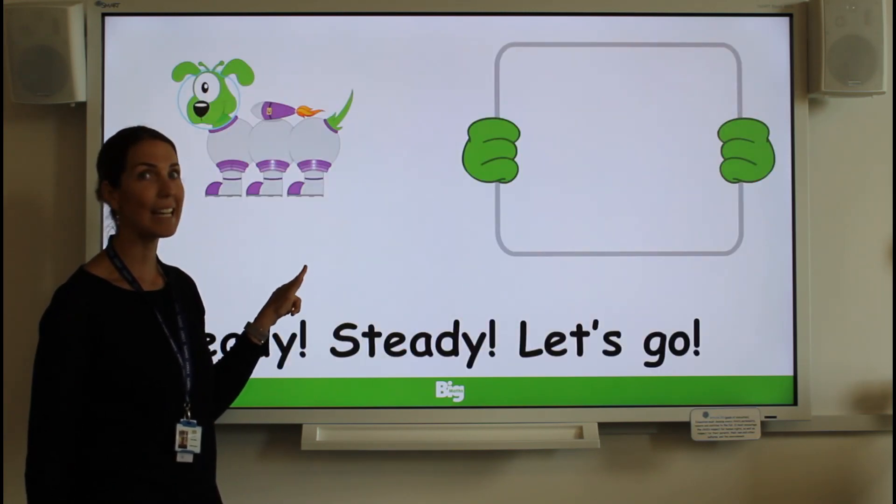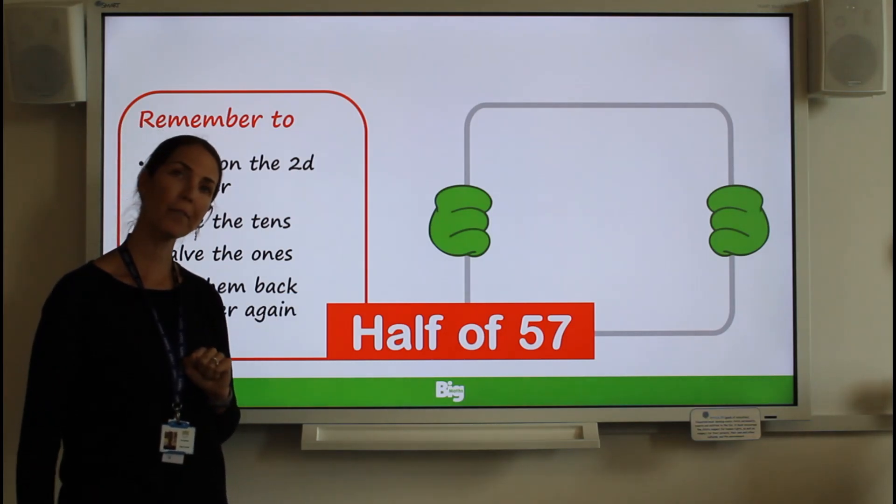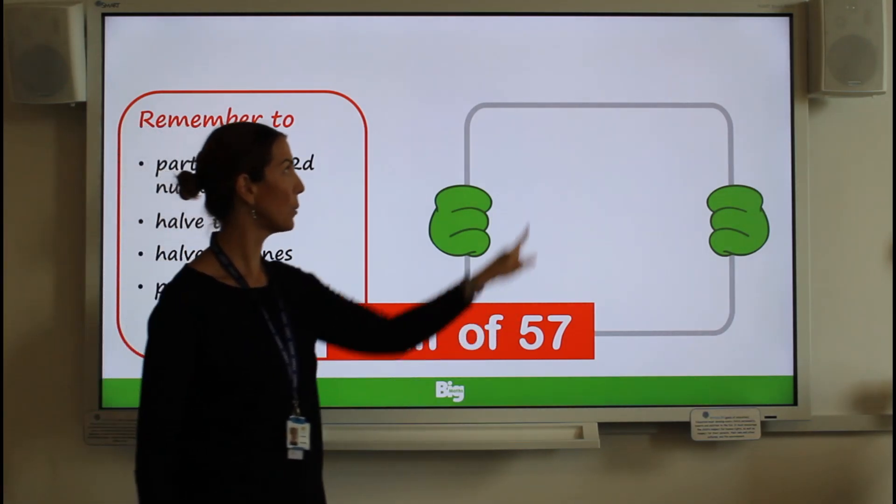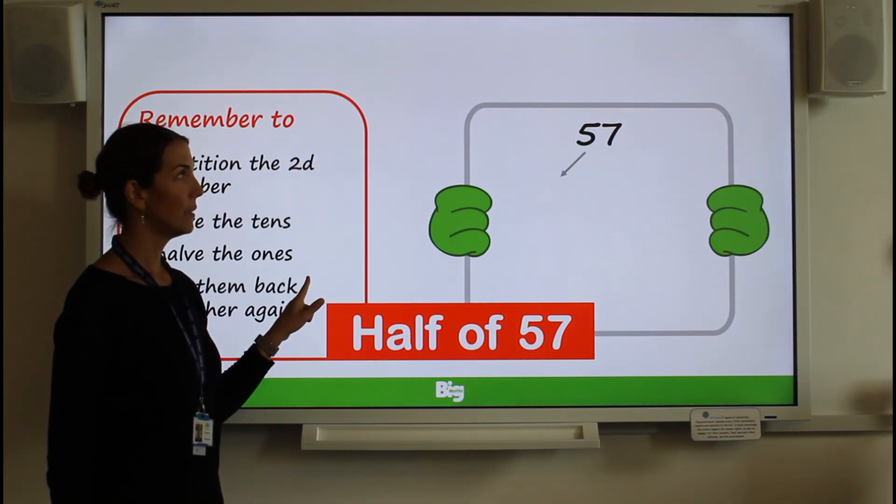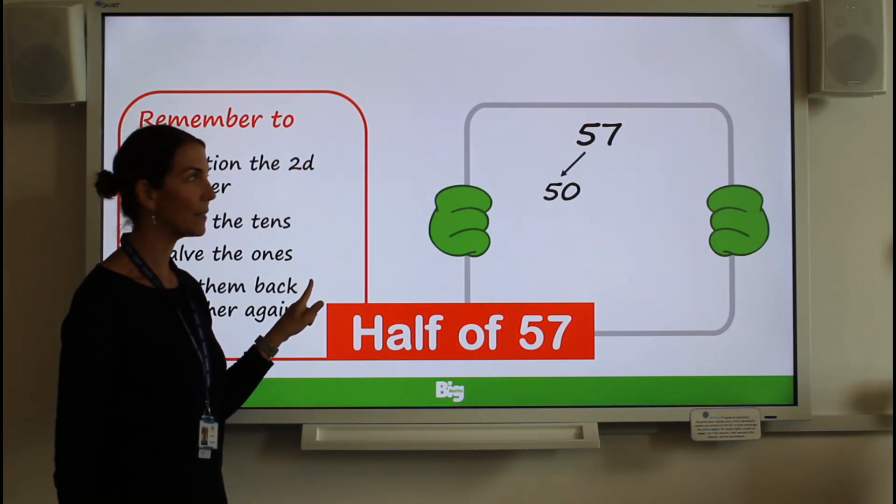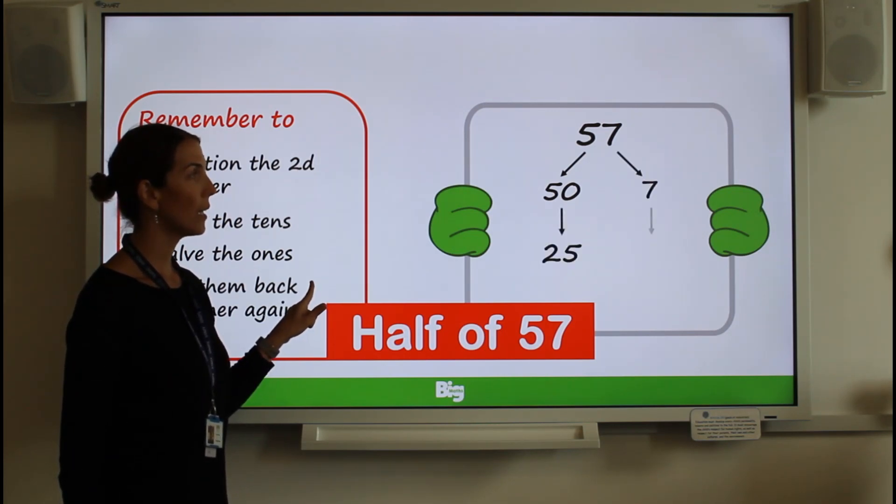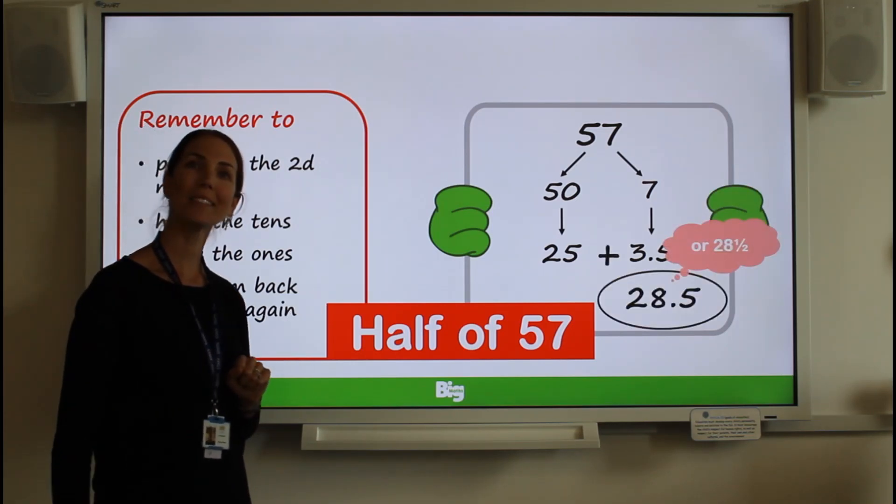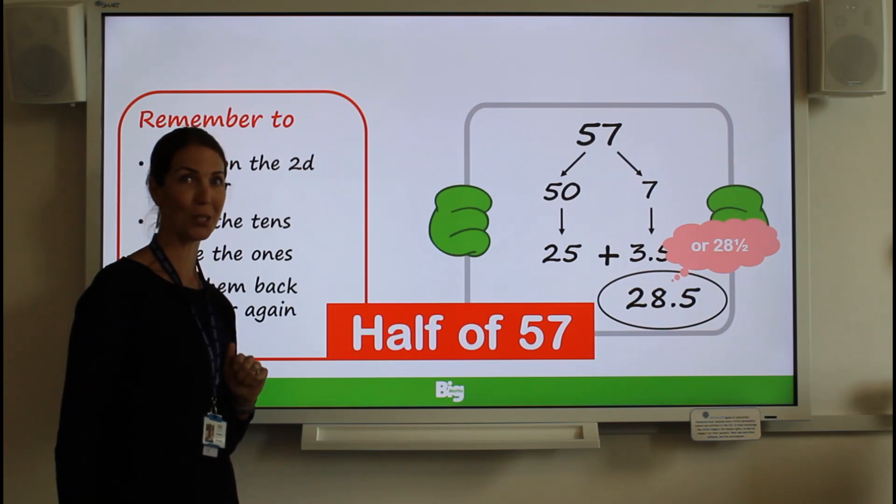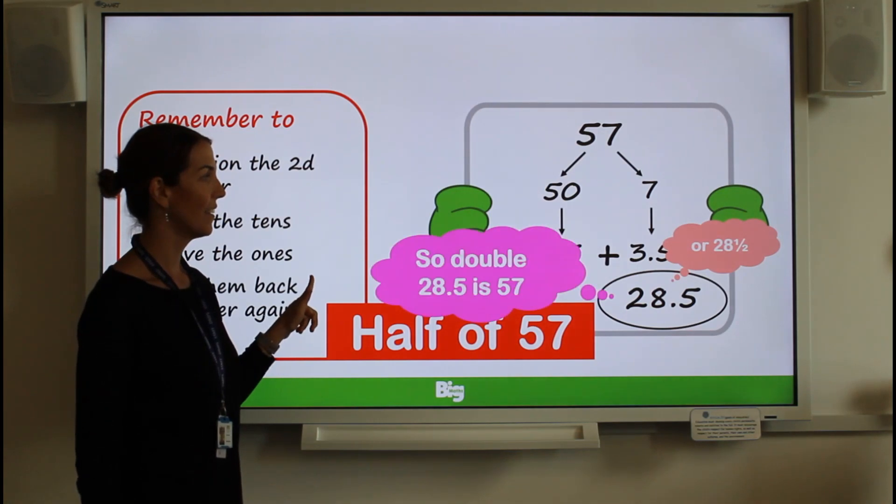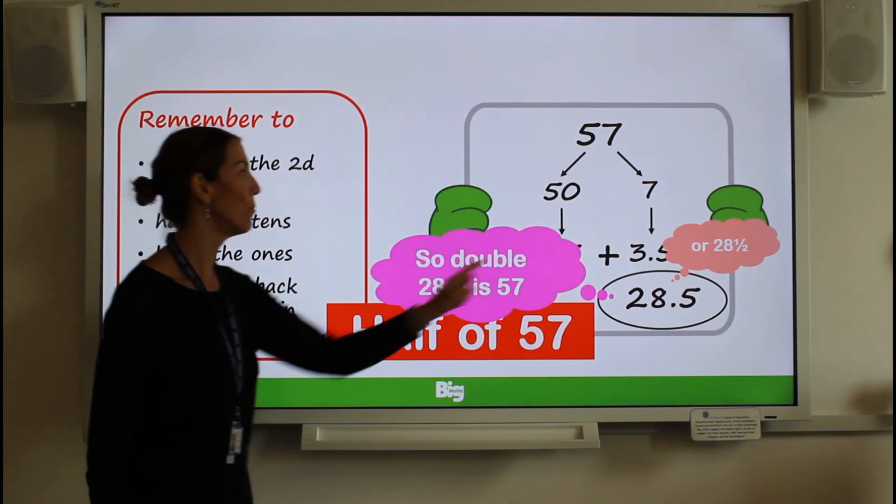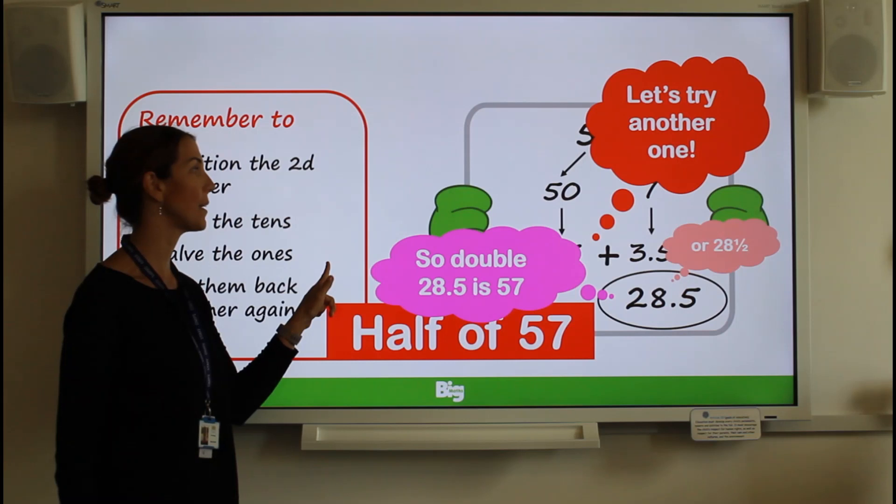Ready? Steady. Next one. Half of 57. What will happen if I put 57 in the top and I partition each one into a 50 and a 7? If I half each one, I get 25, I get 3.5. If I put them together, I get 28.5. Is that what you have on your piece of paper or whiteboard? Fantastic. If I also know if I double my answer of 28.5, I will get 57 again.